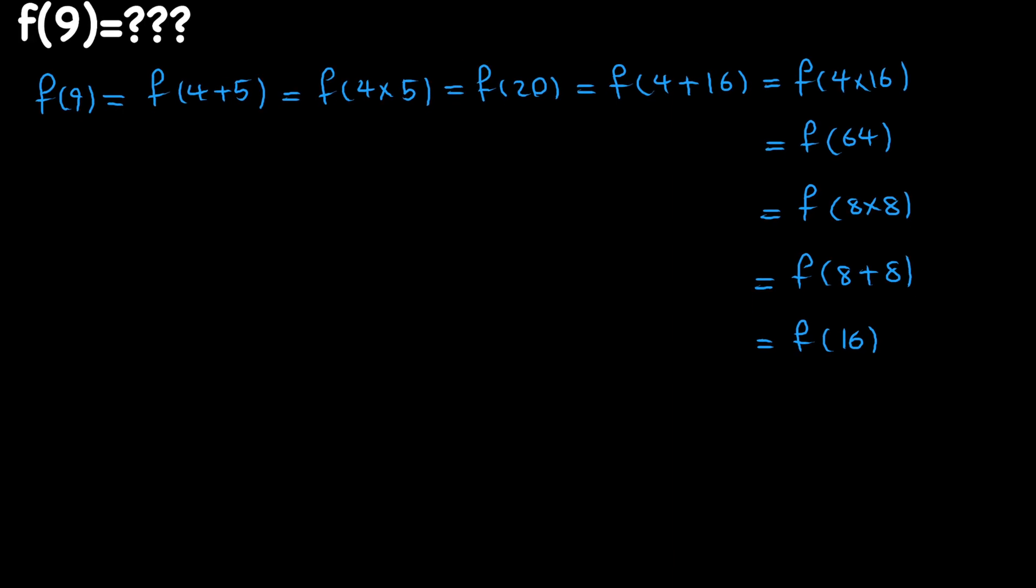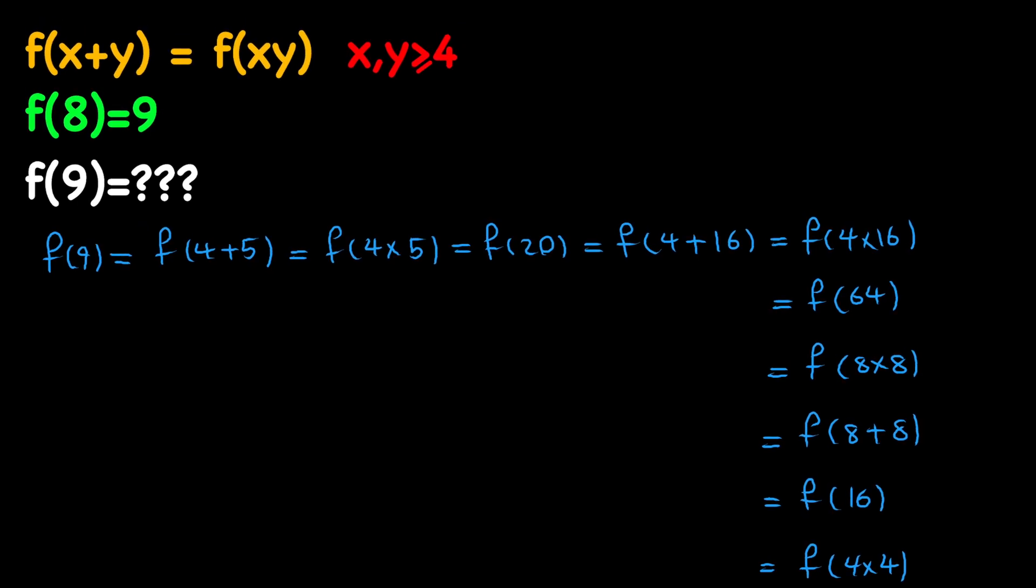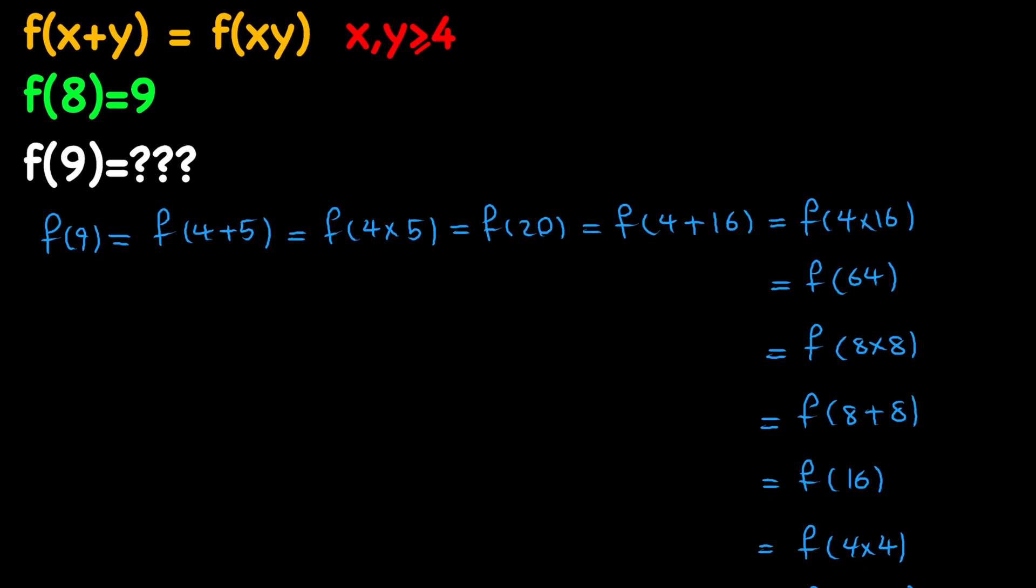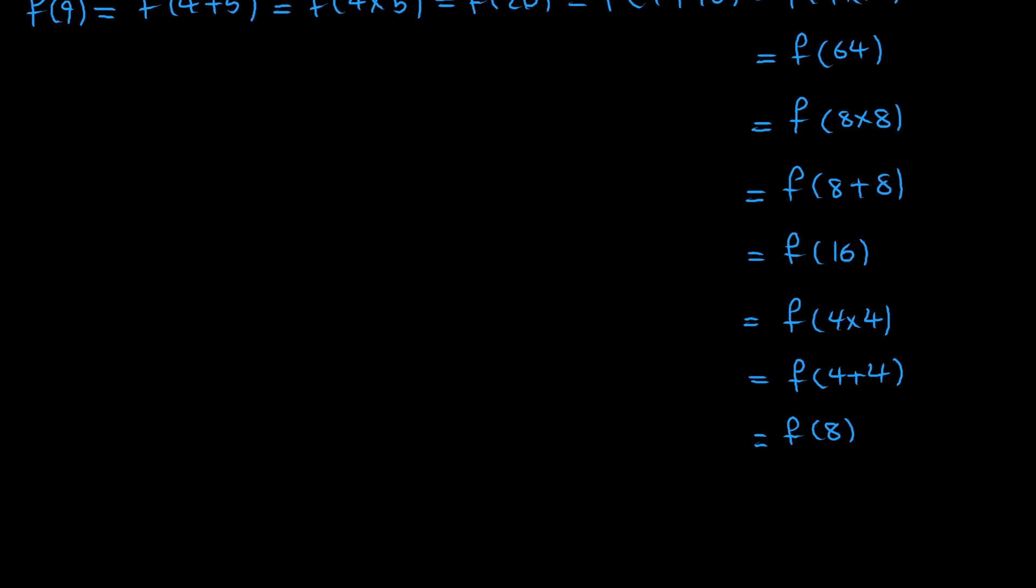And now, we know that 16 is just four squared or four times four. And again, let's turn the product into a sum. And we will have f of four plus four, which is f of eight. And we know that we are given that f of eight equals nine. So this is equal to nine.